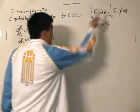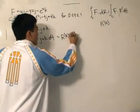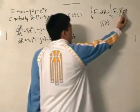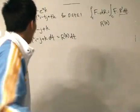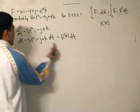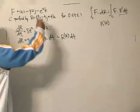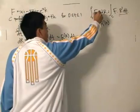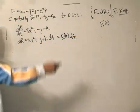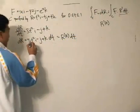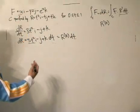Now, we have dr with its i, j, and k components, and we can dot this with the vector field. That's why we have the dot product here. To take the dot product, you simply take the i component and multiply by the corresponding i component, j multiplied by j, k multiplied by k, and then add them all together.